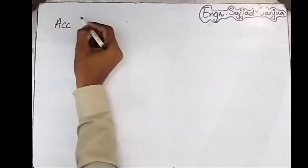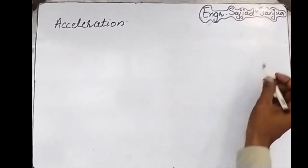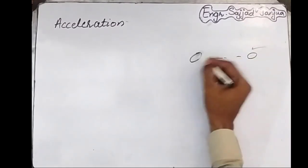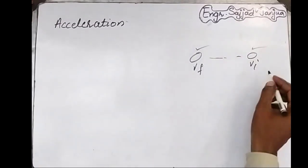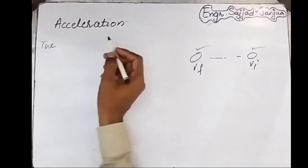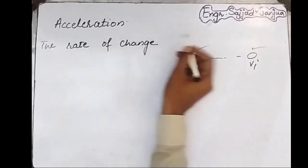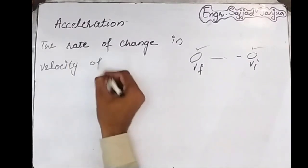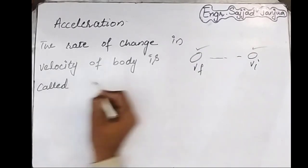Now we will discuss acceleration. To understand acceleration, consider a body having some velocity, and after some time its velocity changes. First it has initial velocity vi and after some time it has final velocity vf. This change in velocity per unit time is called acceleration. The rate of change of velocity of a body is called acceleration.